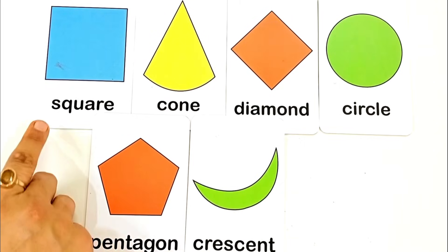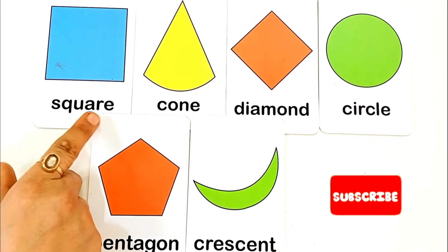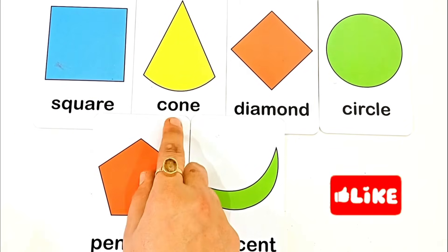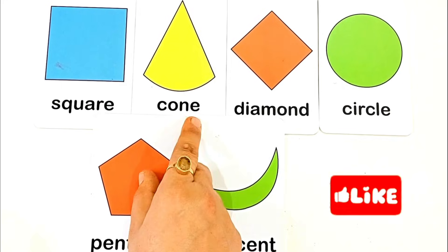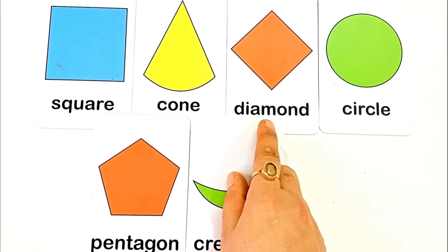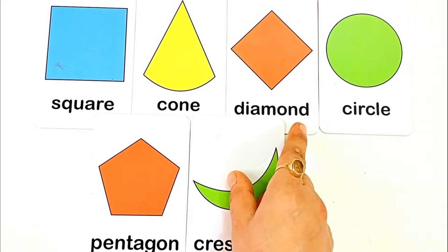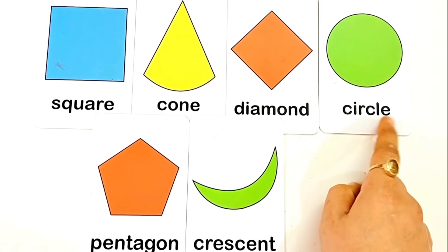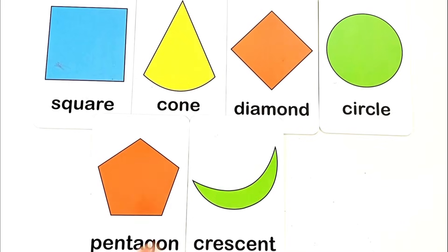S for square. S Q R E, square. C for cone. C O N E, cone. D for diamond. D I M O N D, diamond. C for circle. C I R C L E, circle. P for pentagon. P E N T H O, pentagon. C for crescent. C R E S C E N T, crescent.